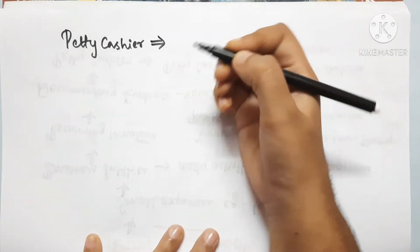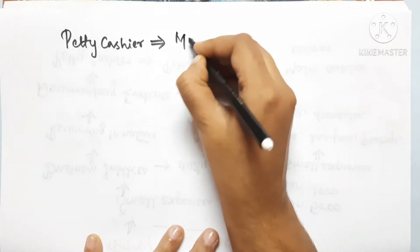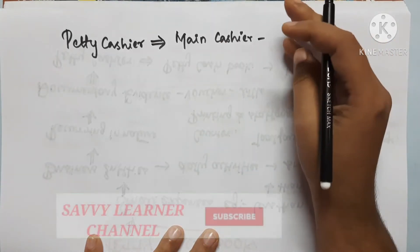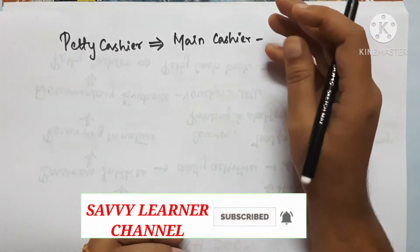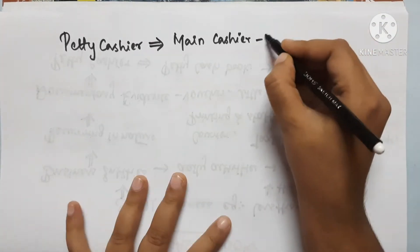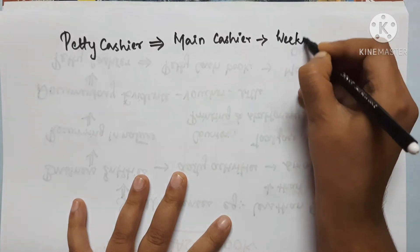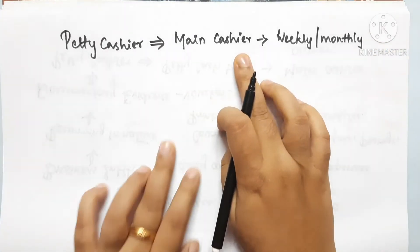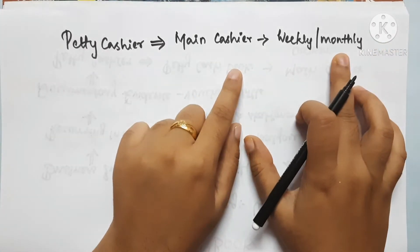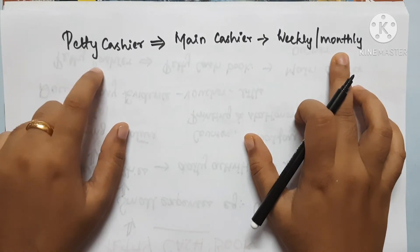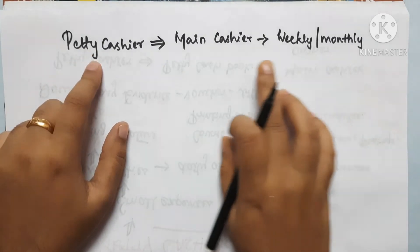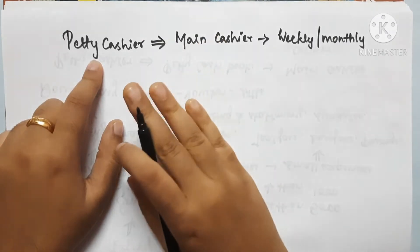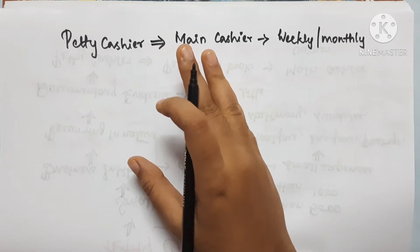How do they maintain it? The main cashier allocates an amount - for example 5,000 - to the petty cashier. The main cashier provides this weekly or monthly, whichever is convenient. The petty cashier will maintain all the expenses from that allocated amount. The petty cashier has to account for the amount received from the main cashier and record the same expenses.